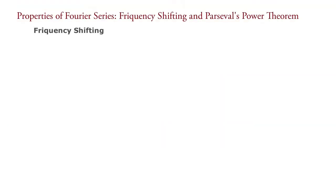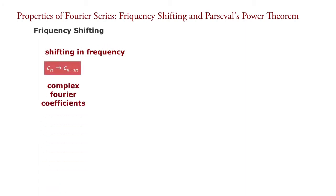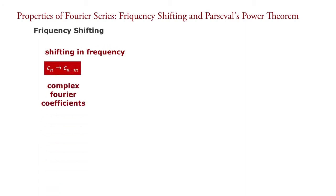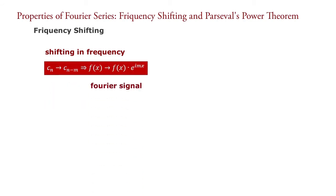First, frequency shifting. This property of Fourier series is defined as the shifting in frequency makes the change in complex Fourier coefficients from C_n to C_{n minus m}, and the Fourier signal from f(x) to f(x) multiplied by e raised to i·m·x.